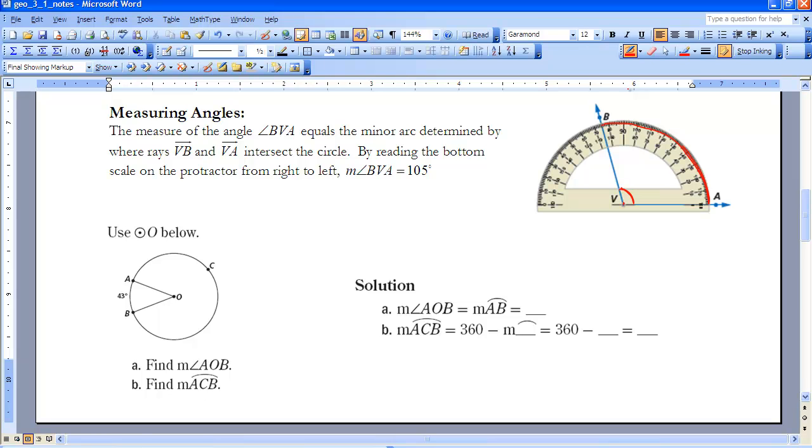So when putting your protractor on, remember, the vertex goes on the center point, one of the rays goes at zero, and then you follow the number set that goes up from zero. So in this case, it's greater than 90, goes here over to 105 degrees. So notice the notation for that, a small m, with the angle symbol of BVA equals 105.